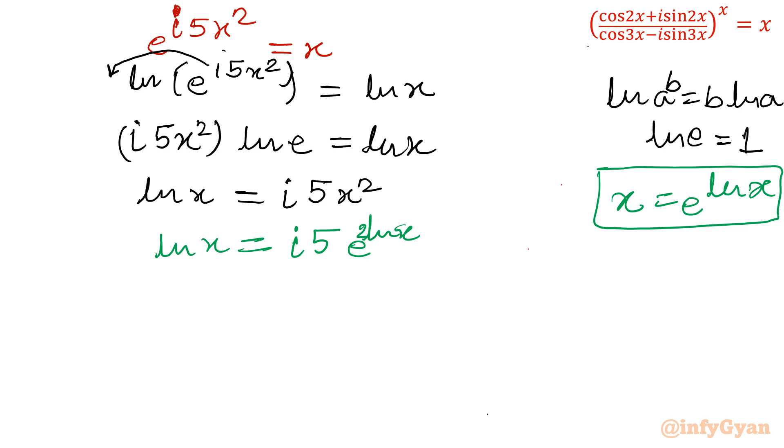I will take e raised to the power 2 ln x towards left. How is it possible? By dividing e raised to the power 2 ln x. If I divide, equation will become ln x times e raised to the power minus 2 ln x equal to 5i.